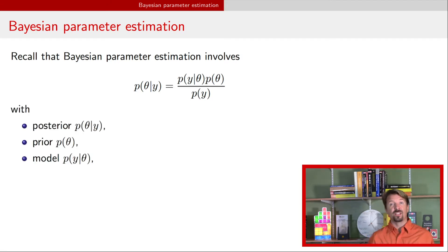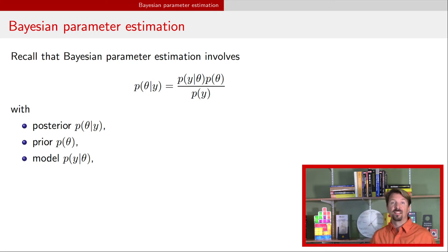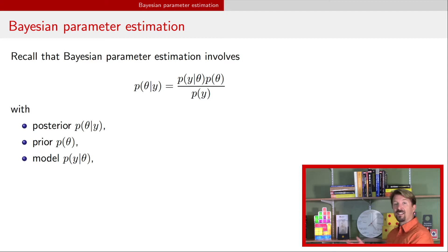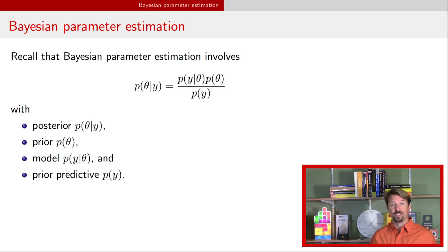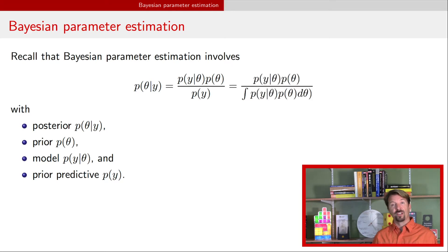On the left side of the equality, we have the posterior distribution — really, the posterior probability density function. On the right side, we have p(y|theta), that is the model, multiplied by the prior probability density function. In the denominator, we have the prior predictive distribution, which can be determined from the numerator by integrating out the parameter theta.